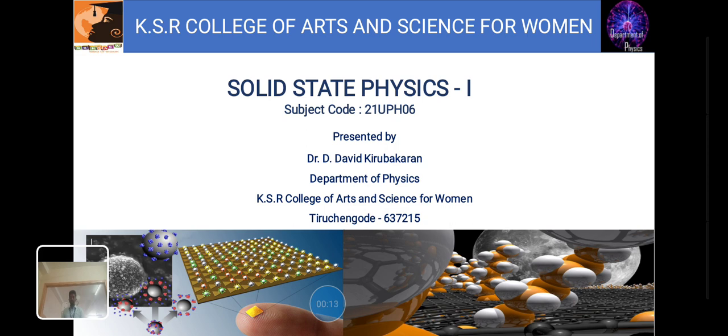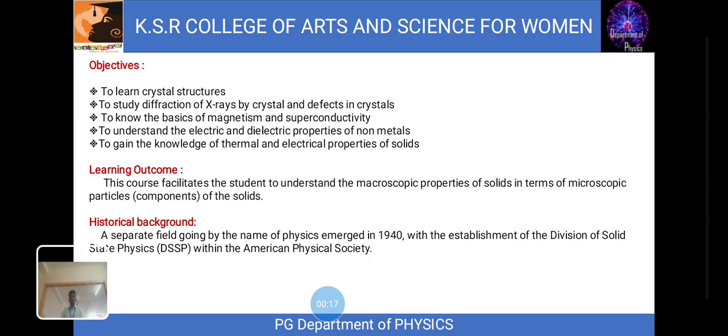First we'll see the definition of solid state physics. Solid state physics is a branch of physics which deals with practical and theoretical investigations of the properties of solids, such as superconductivity, photoconductivity, and ferromagnetism.